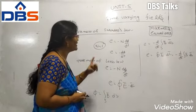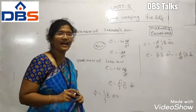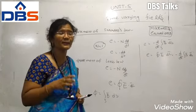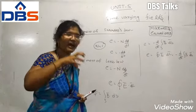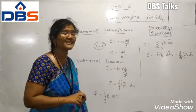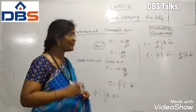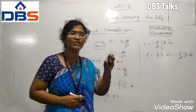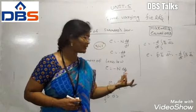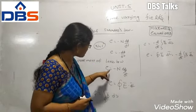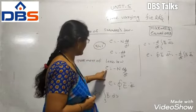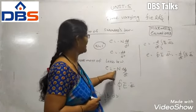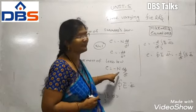Next, the statement of Lenz's law. What is Lenz's law? The Lenz's law states that it opposes the cause that produces it. That means the cause to produce the electromotive force is nothing but the flux, and the induced EMF opposes that direction. That is why you write the minus sign in the equation.